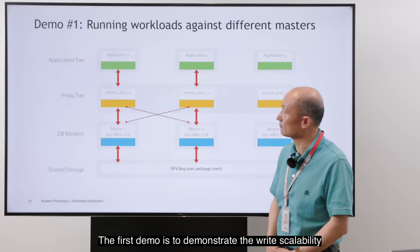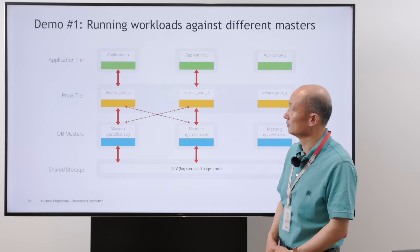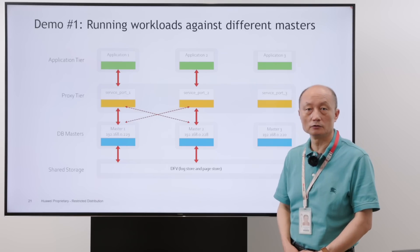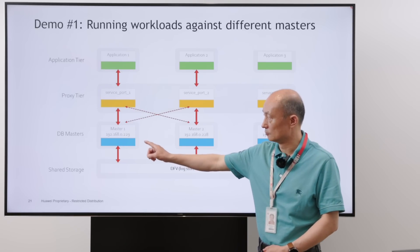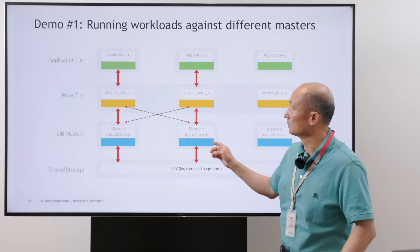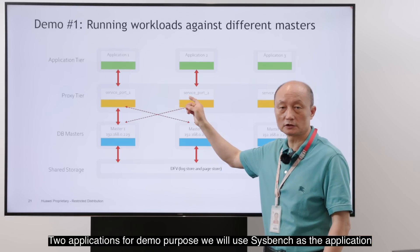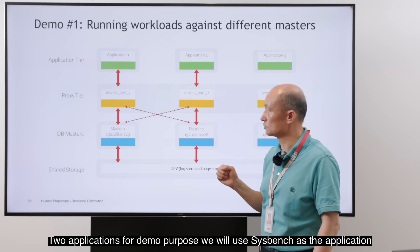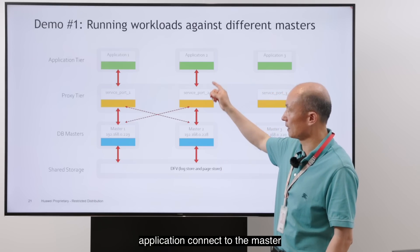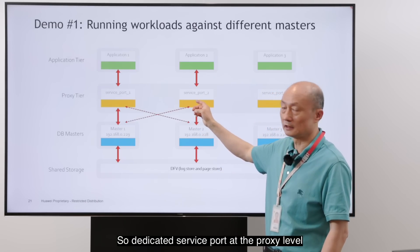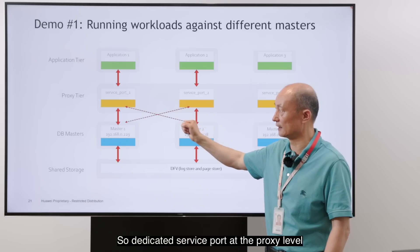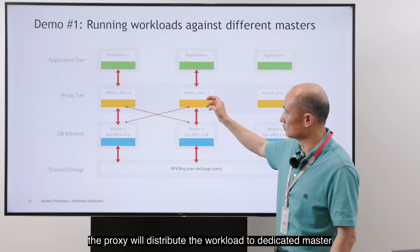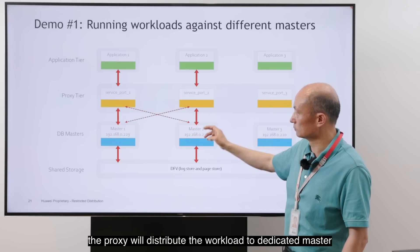The first demo demonstrates write scalability. We have a running workload against different masters — here we have two masters, Master 1 and Master 2, representing two applications. For demo purposes, we use Sysbench as the application. The application connects to the master through a dedicated service port at the proxy level, and the proxy distributes the workload to the dedicated master.